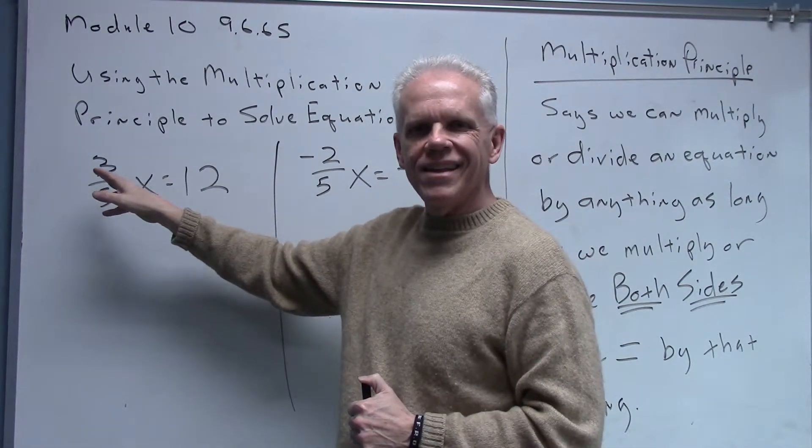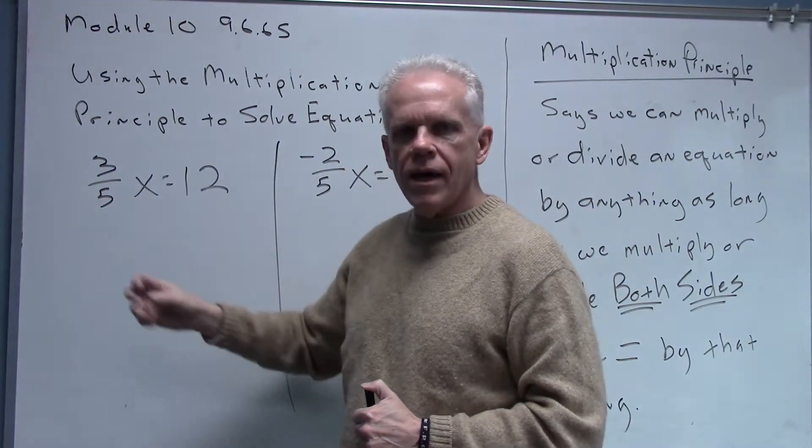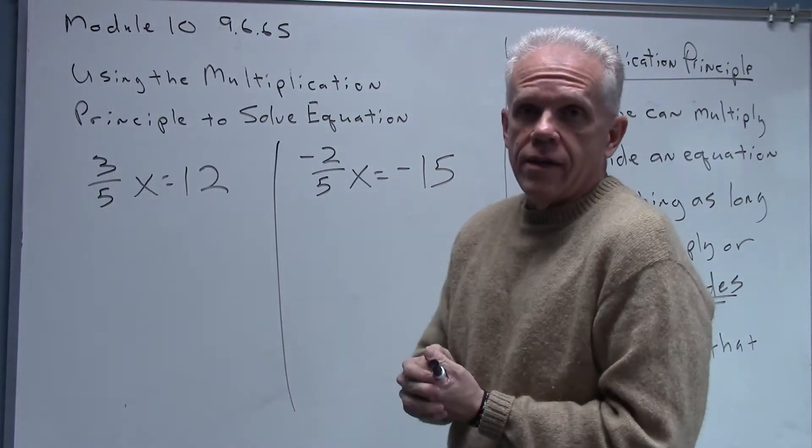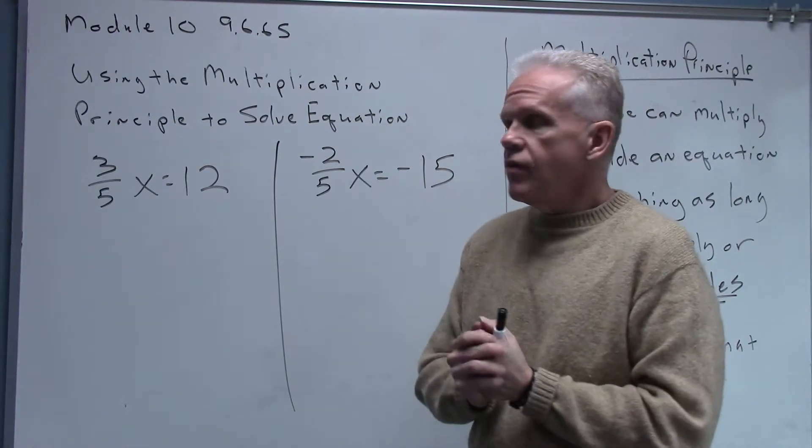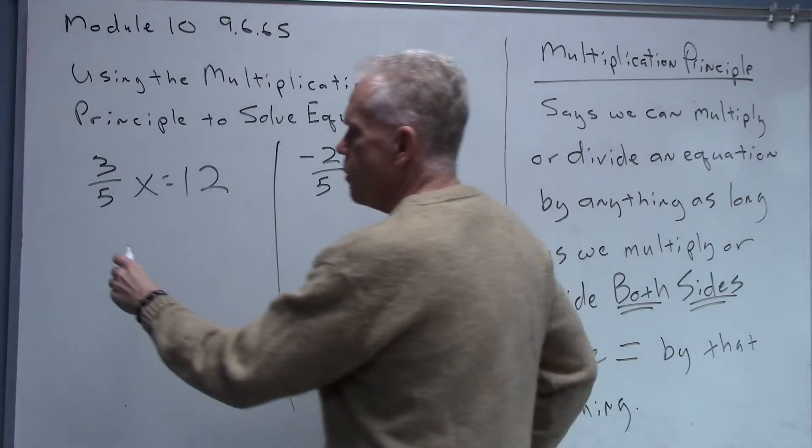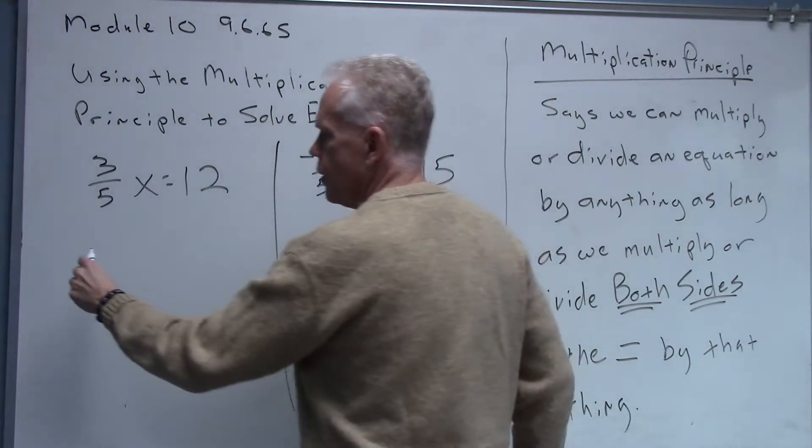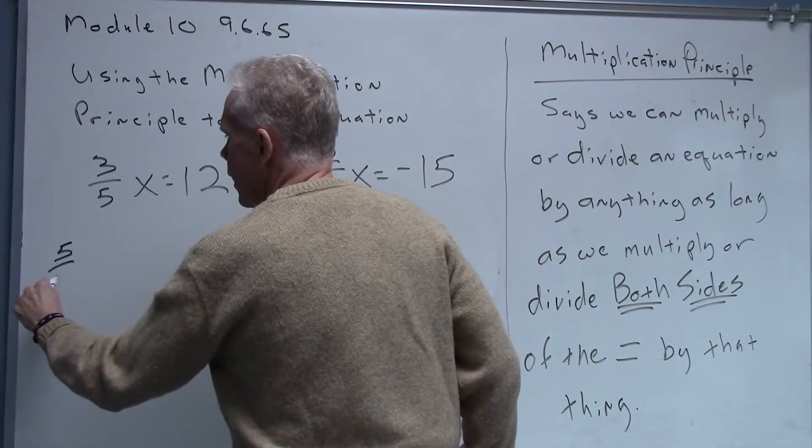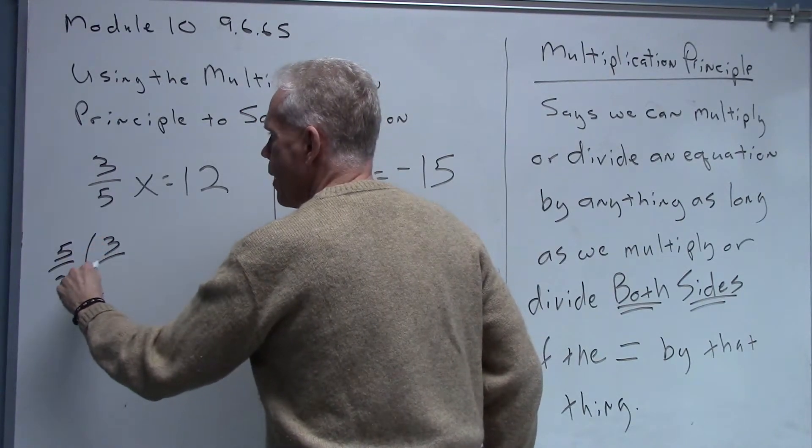Now if I could get the three-fifths off the x, if I could make it cancel out, go away, I'd have x by itself. I want to isolate that x. So that's exactly what I want to do. So what I think I'll do is come over here to this left side of the equation and multiply on this side by the reciprocal of three-fifths.